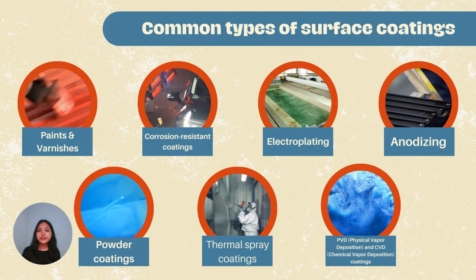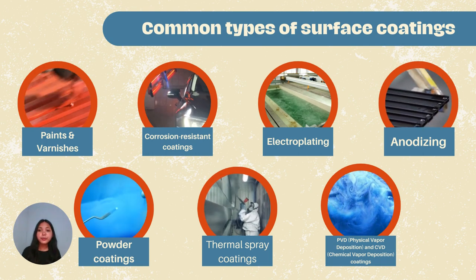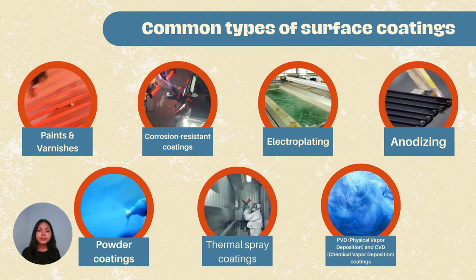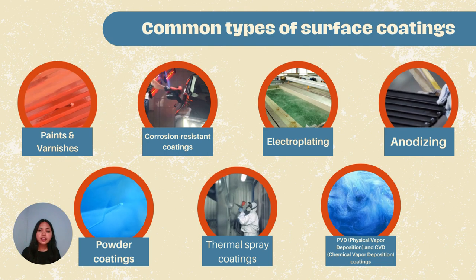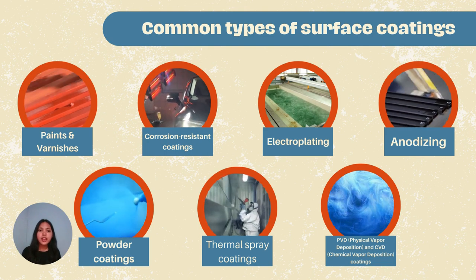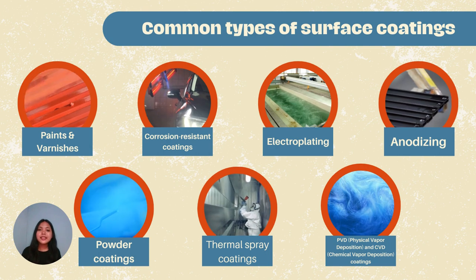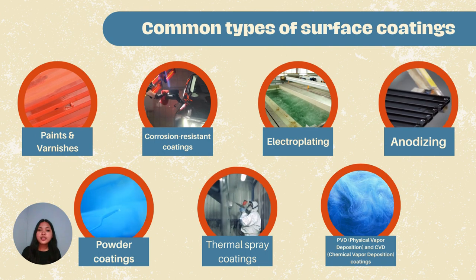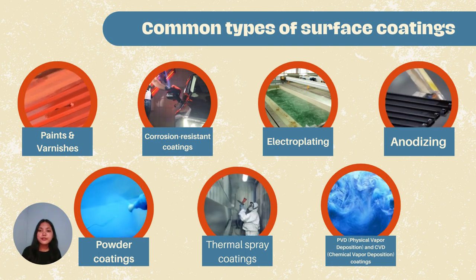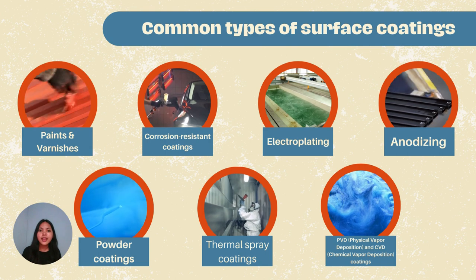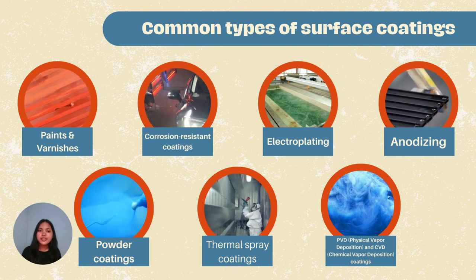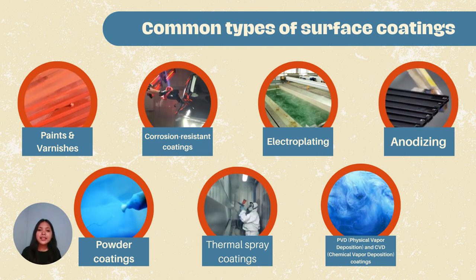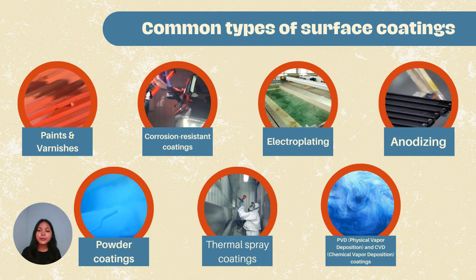There are many types of surface coatings, each with its own specific properties and applications. Some common types include paints and varnishes, used for decorative and protective purposes on various substrates; corrosion resistant coatings, which protect metals from chemical and environmental corrosion; electroplating, a process in which a metal coating is deposited on a conductive surface through electrolysis; anodizing, an electrochemical process that enhances the oxide layer on metals like aluminum; and powder coatings, applied as a dry powder and cured to form a durable finish.